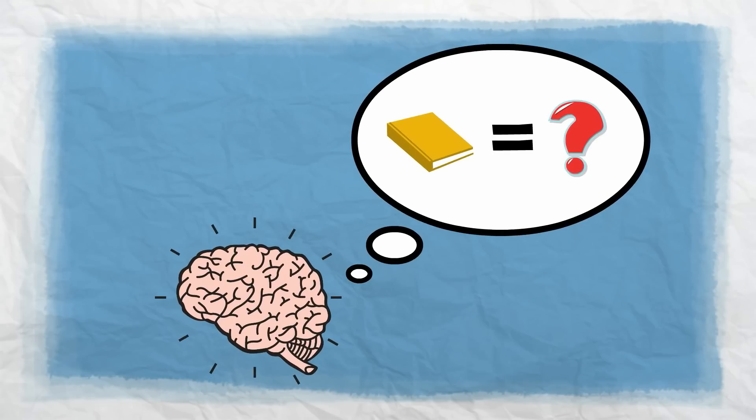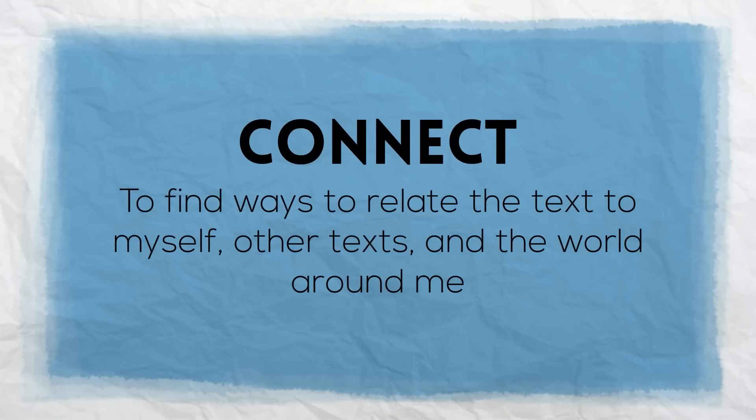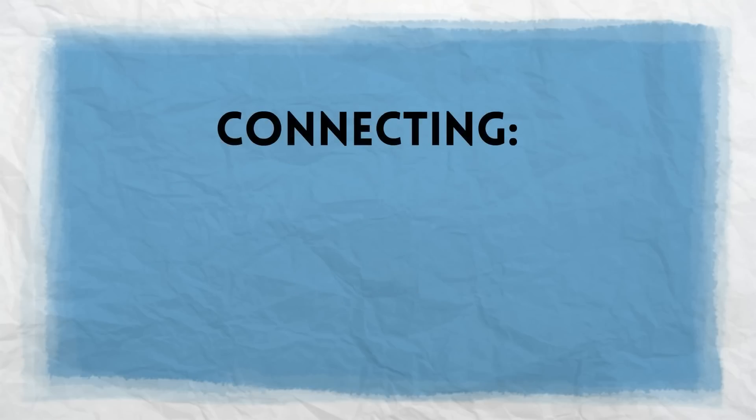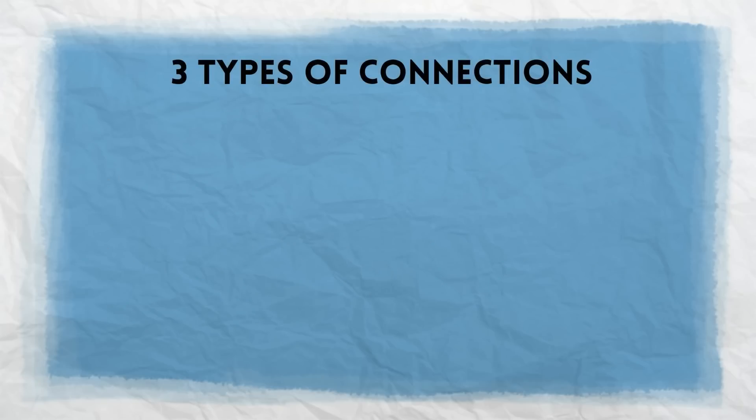This week we're going to focus on the different ways our brain connects to what we read. To connect means to find ways to relate the text to myself, other texts, and the world around me. As we read, we make connections when we take new information and connect it to our prior knowledge. We link ideas together. Sometimes we'll see similarities between the two, and other times we'll see differences. Either way, we are making a connection. We can make connections in a lot of different ways and to a lot of different things.